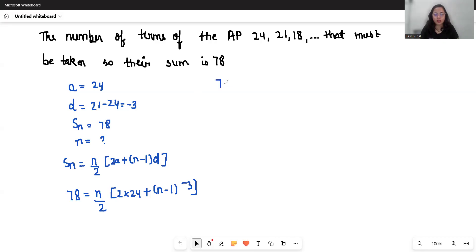So Sn is 78 equals n by 2, 2 times 24 plus n minus 1 times minus 3. So 78 equals n by 2 times 2 times 24 is 48 minus 3n plus 3. So it's 156 equals n times 51 minus 3n.